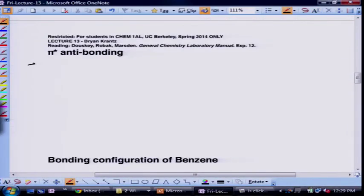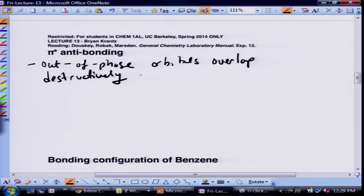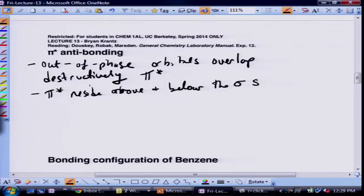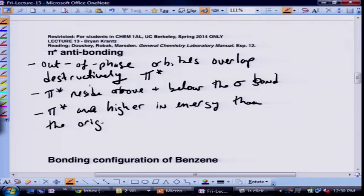So that'll lead us to anti-bonding. So in anti-bonding, by contrast, the electrons are forming out-of-phase orbitals, out-of-phase orbitals that overlap destructively. And we denote these as pi star, for people who haven't been paying attention. And again, these pi stars reside above and below the sigma bond. And these pi star anti-bonds are higher in energy than the original p orbitals.